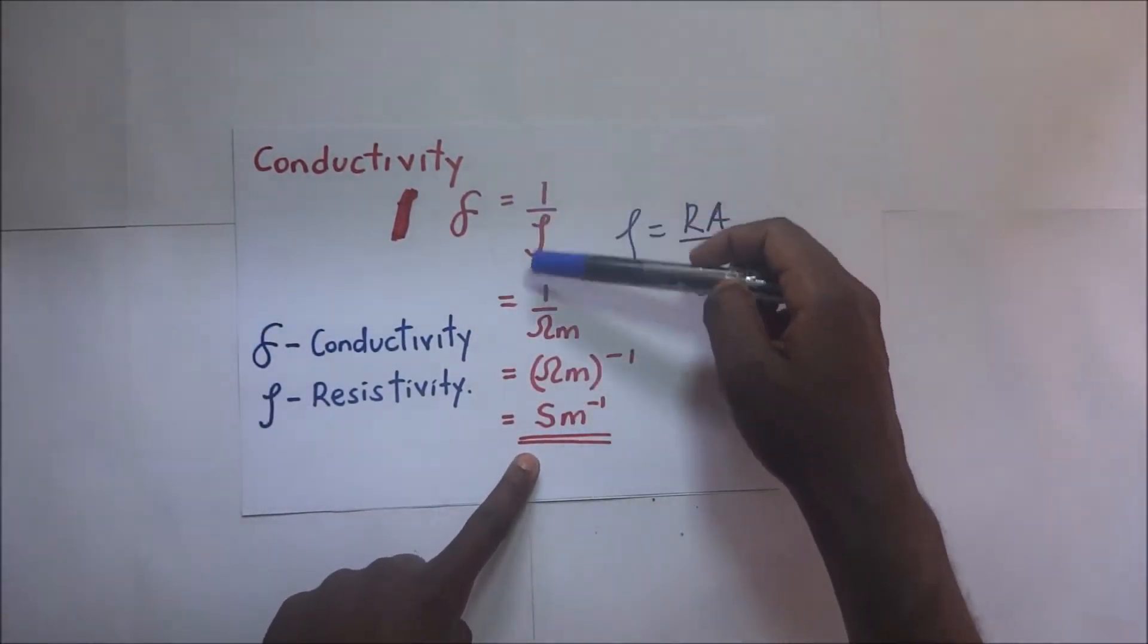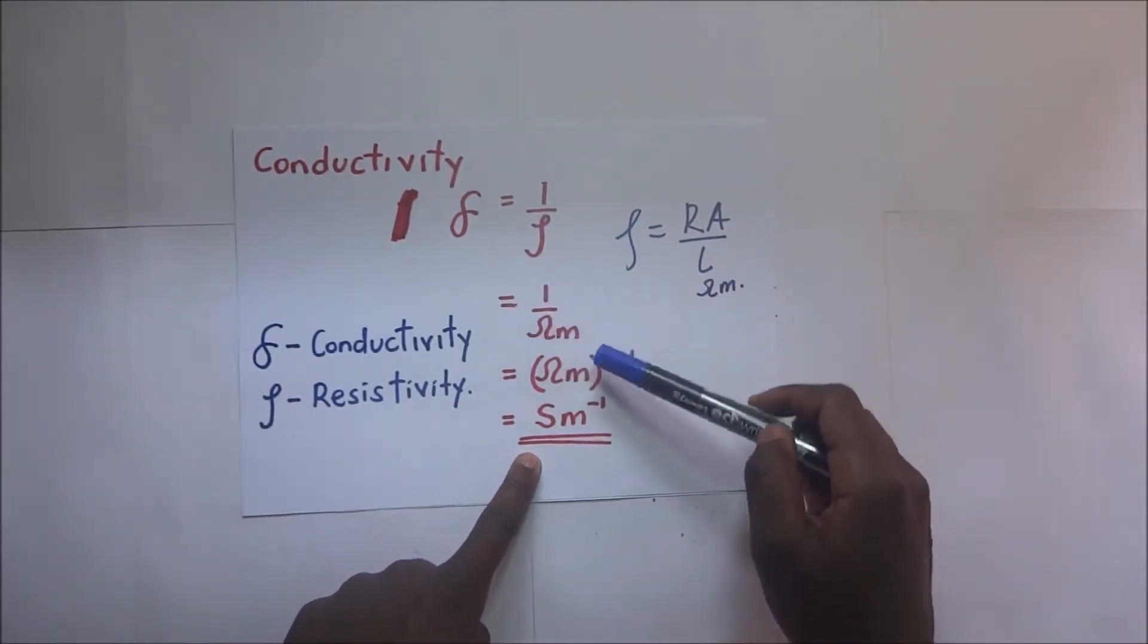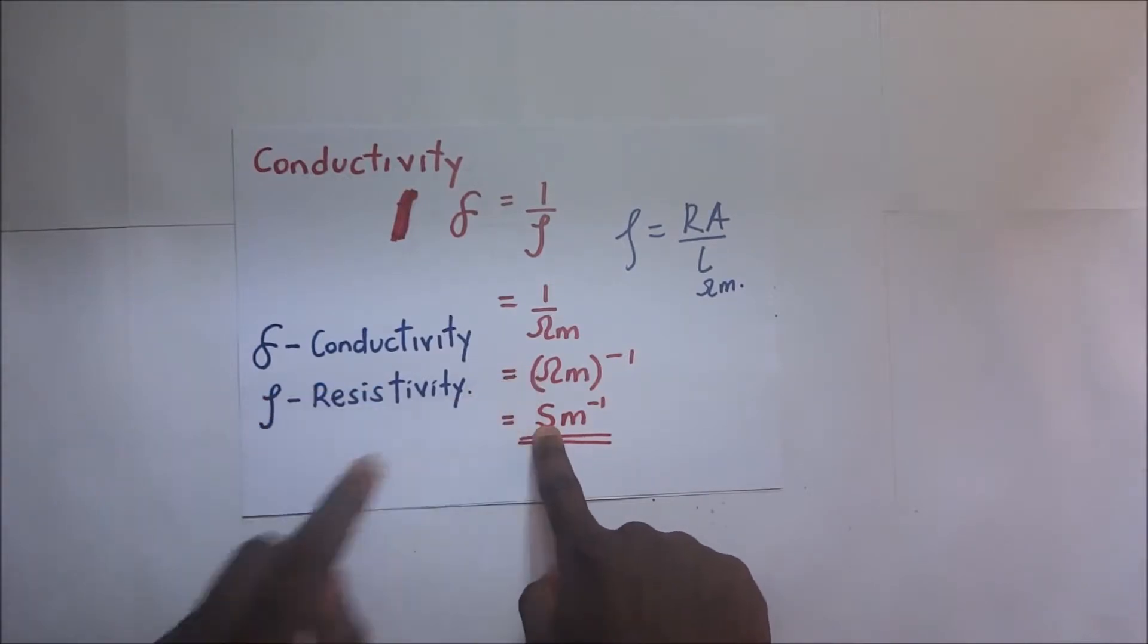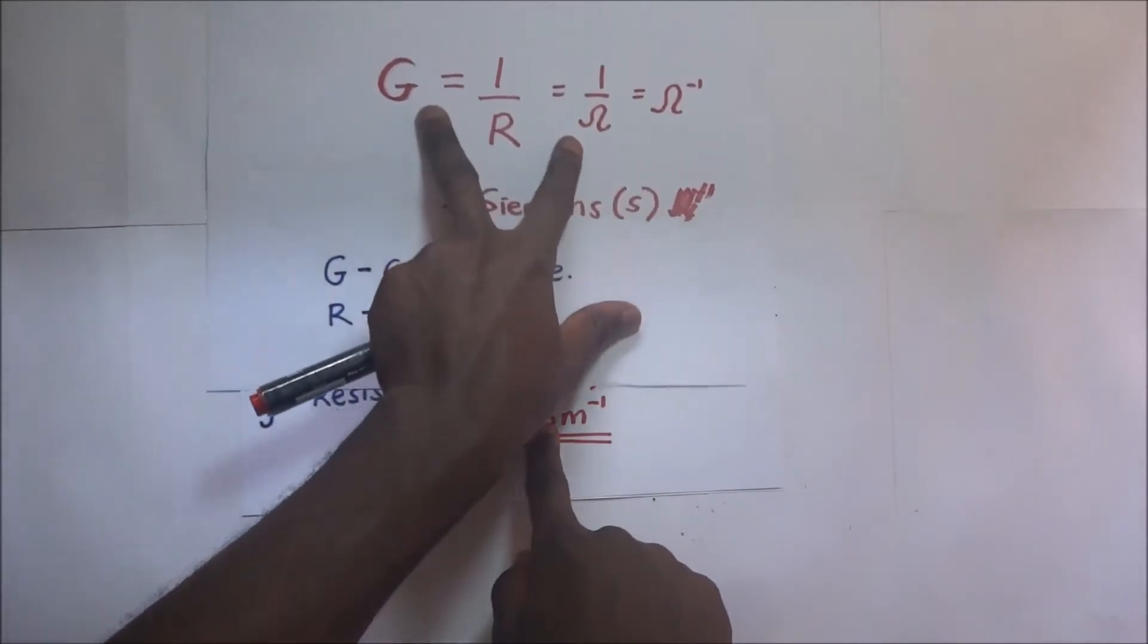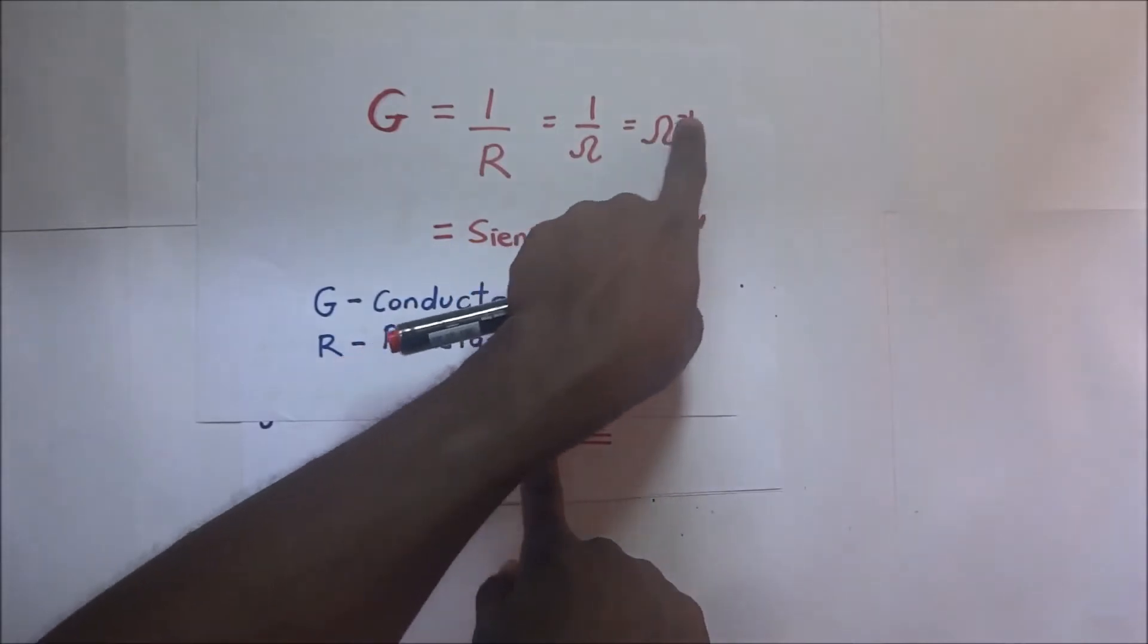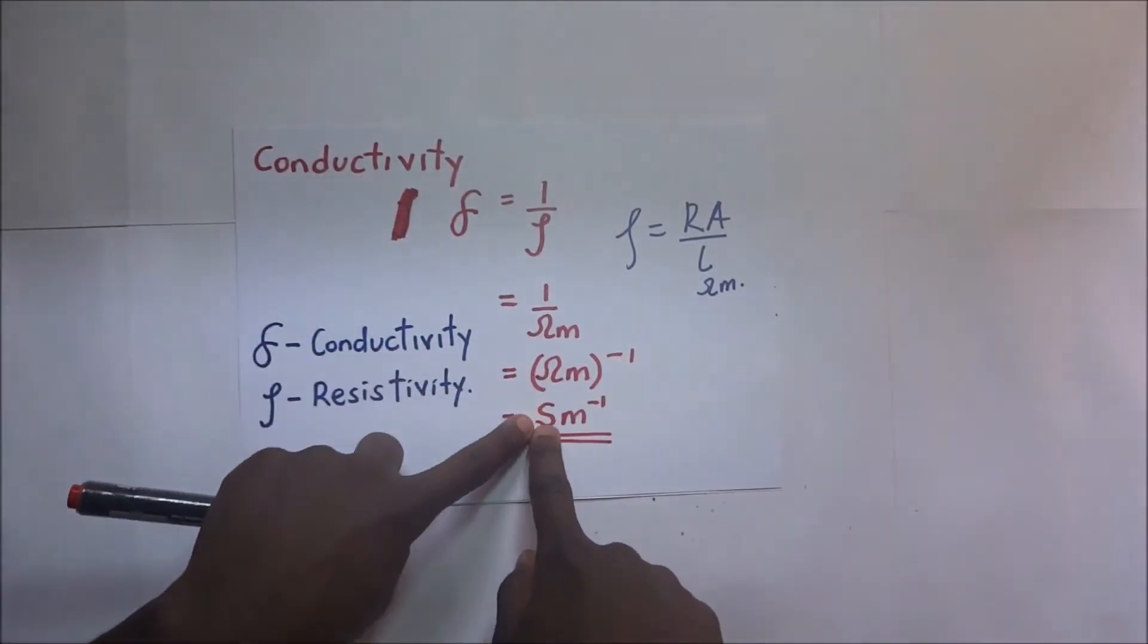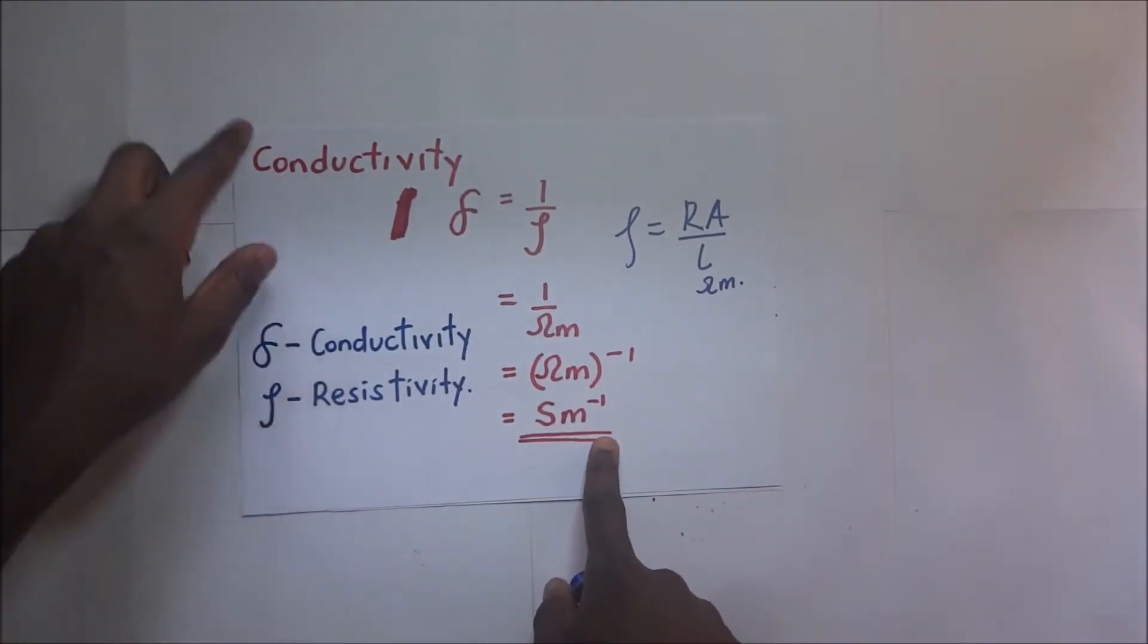Looking at the SI units, it's going to be one over the ohm meter, because this is the SI unit of resistivity. We shall end up with ohm meter to the power negative one. If you remember, ohm to the power negative one is the Siemens. One over ohm is ohm to the power negative one, which is a Siemens. So ohm to the power negative one is Siemens per meter, and this is the SI unit for conductivity.